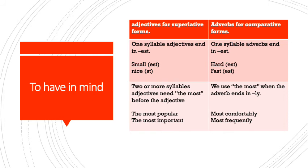When we have adjectives with two or more syllables, we are going to use 'the most.' For example, with the word 'popular' I say 'the most popular,' or 'the most important.' When talking about adverbs, we use 'the most' only when the adverb ends in '-ly' — for example, 'comfortably' and 'frequently' — so both of them need 'most' before the adverb.